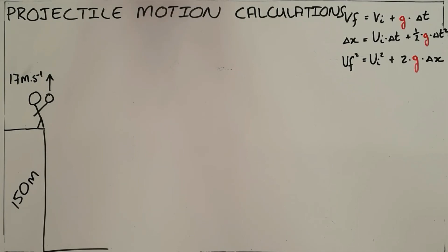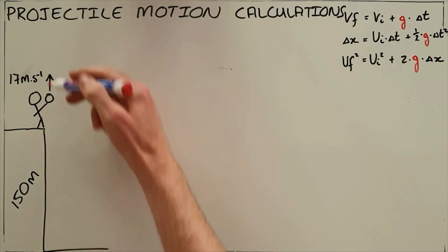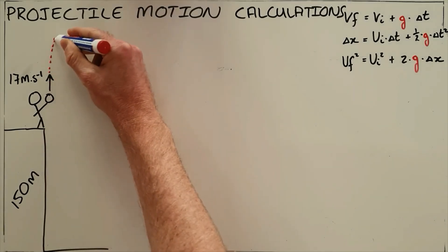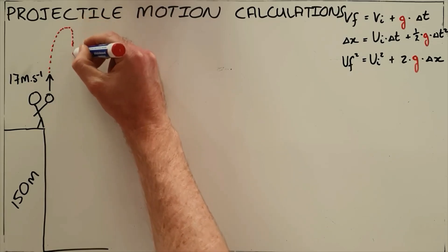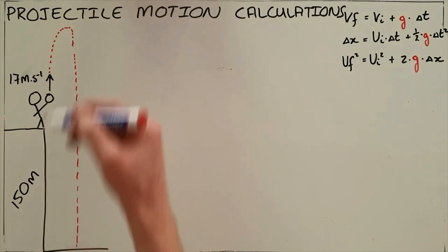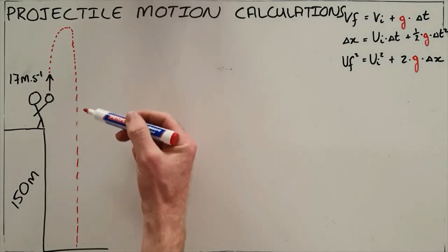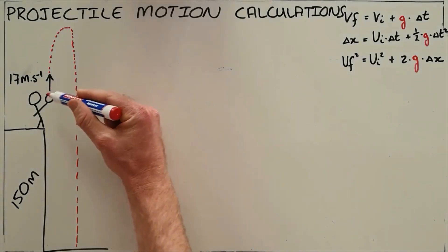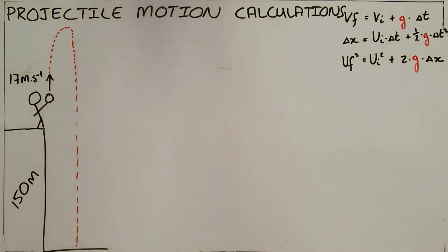The most common projectile motion problem involves an object launched from a certain height above the ground, traveling upward to a maximum height, and then falling down past the starting point until hitting the ground. In this example, the object is launched from 150 meters above the ground at a speed of 17 meters per second.